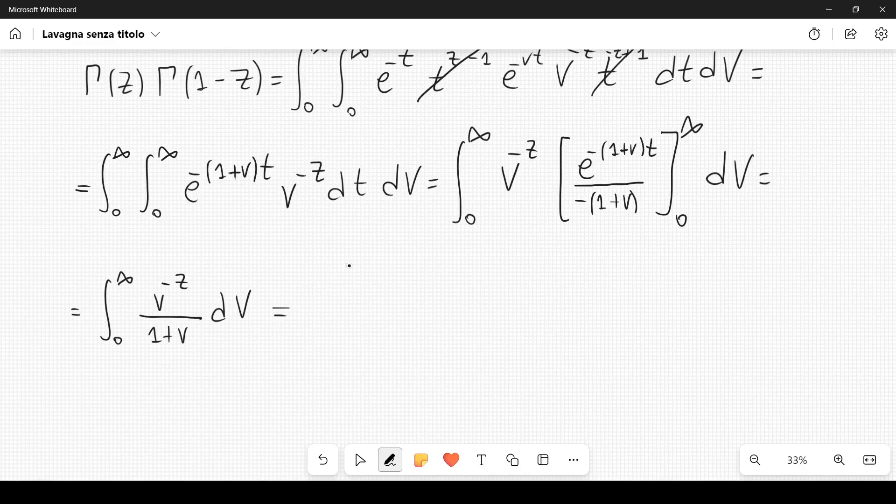Now remember the result that we derived in the previous video, this is pi divided by sine of pi (1 minus z), like this.